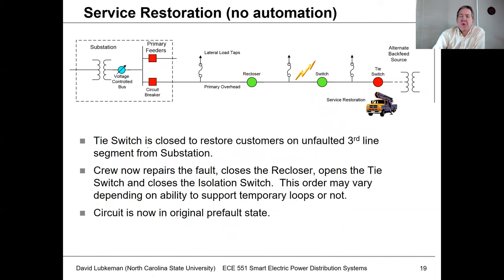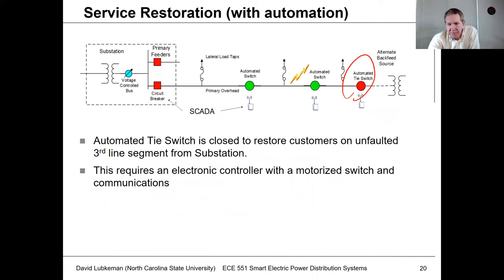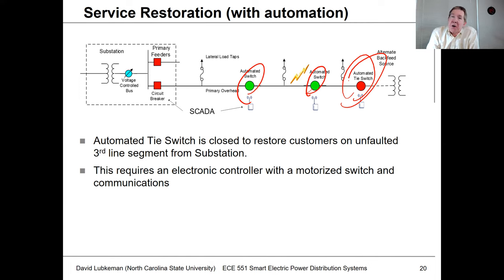For service restoration, one more thing is closing the tie switch to restore customers on the other side. A lot of times this has to be done manually — once the fault is isolated, a crew would drive to the tie switch and close it. But if this is an automated switch, instead of having the crew drive all the way there, a system operator could just close that switch remotely once isolation is complete. You could even have local logic that runs this automatically, with the operator supervising instead of actively doing the switching.